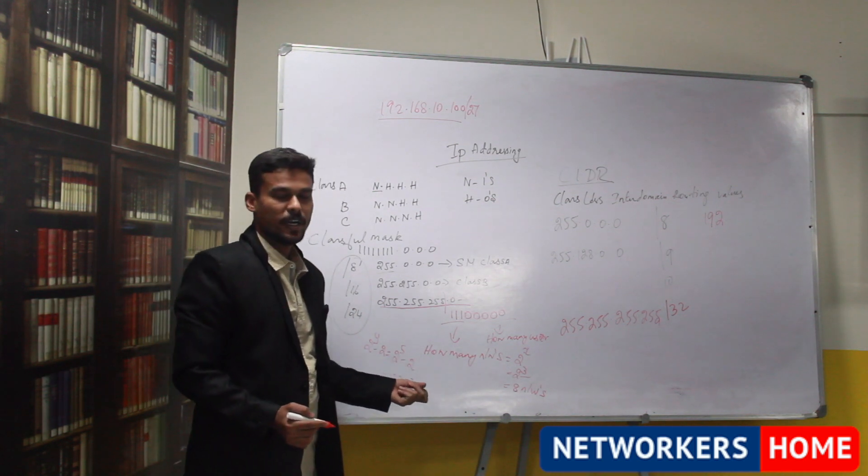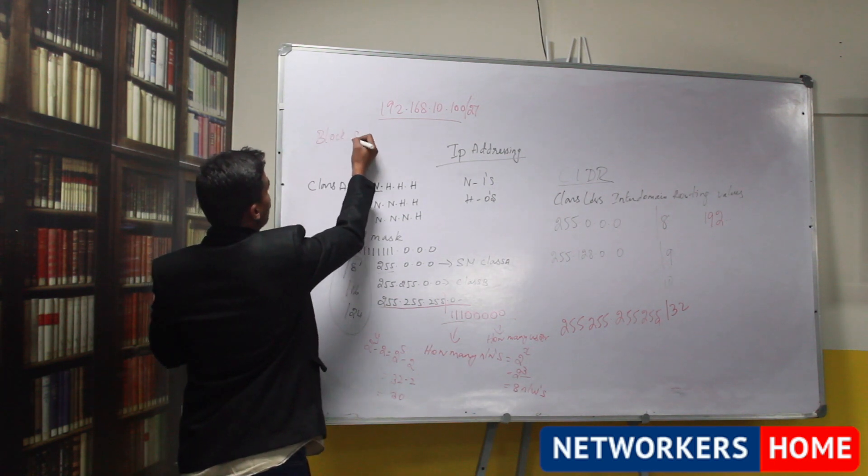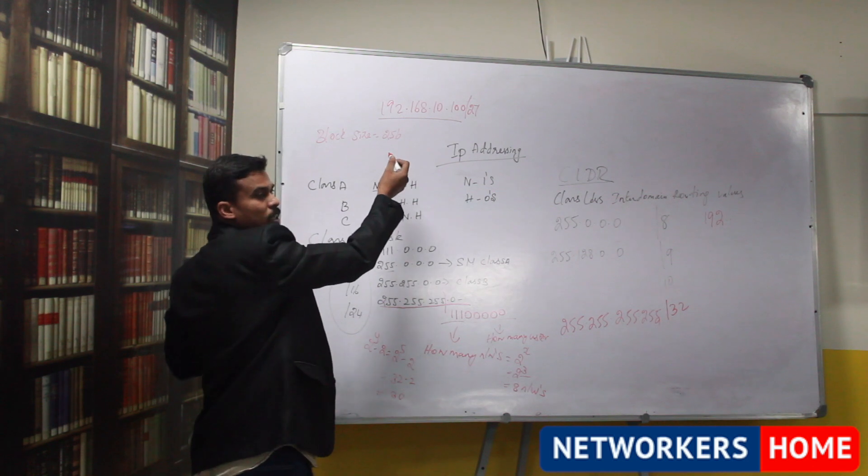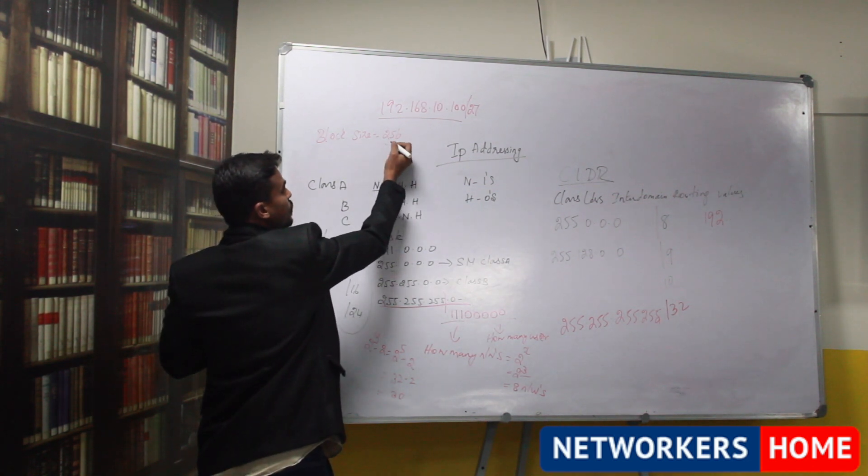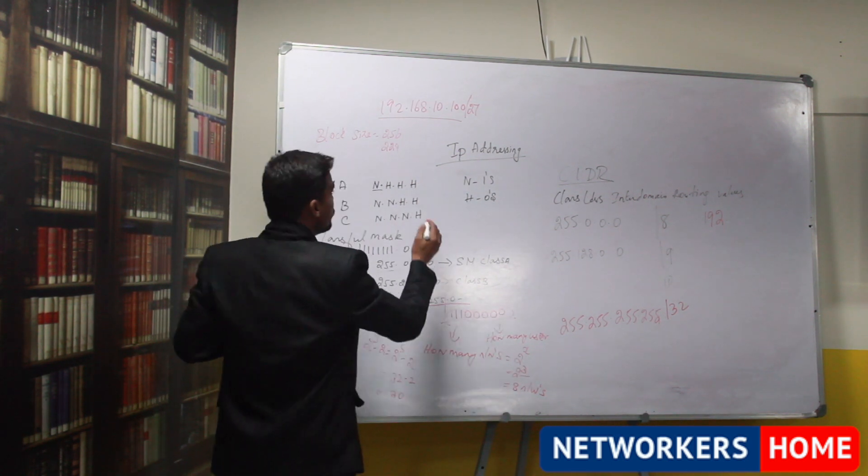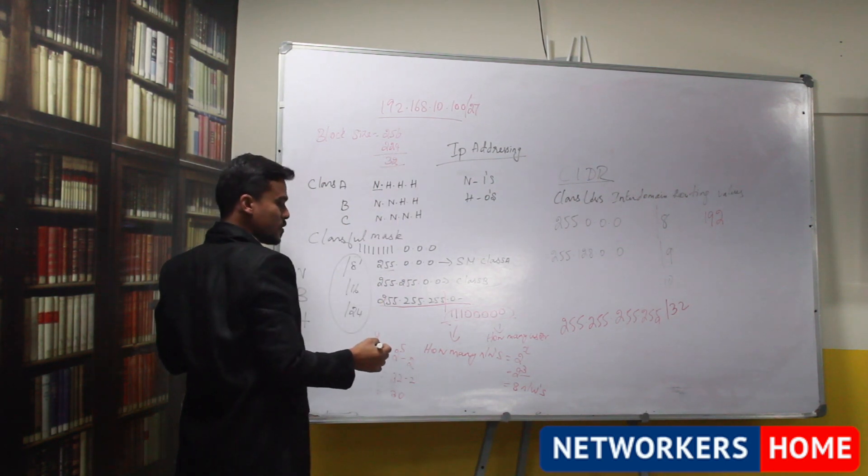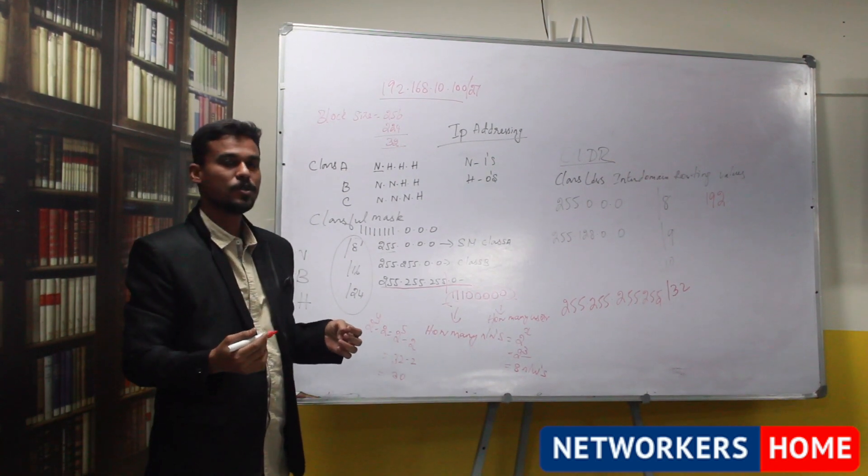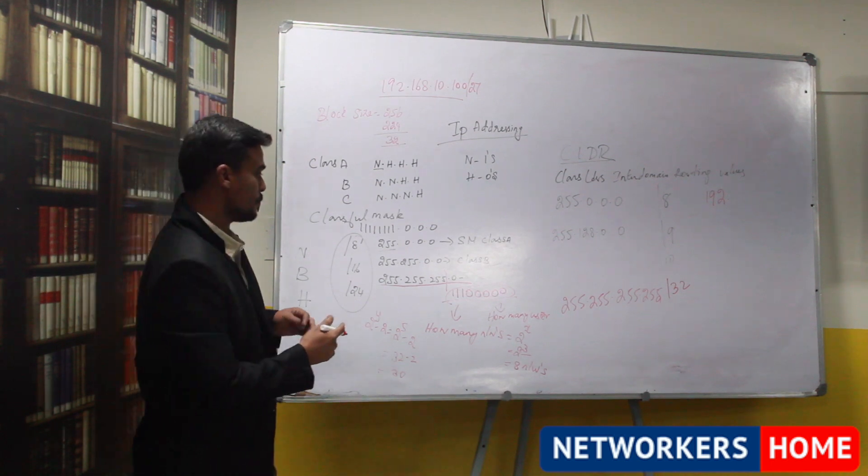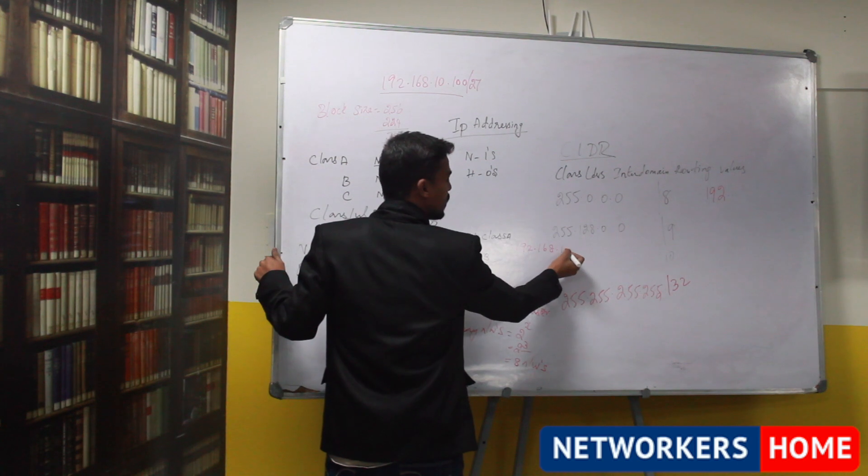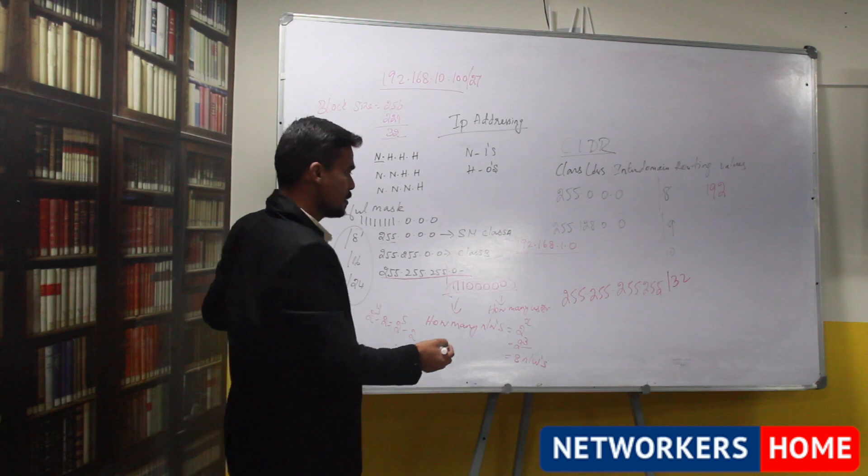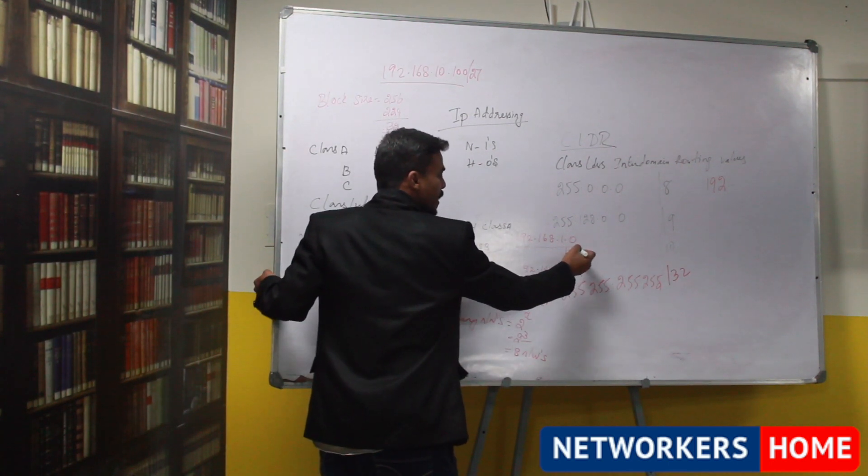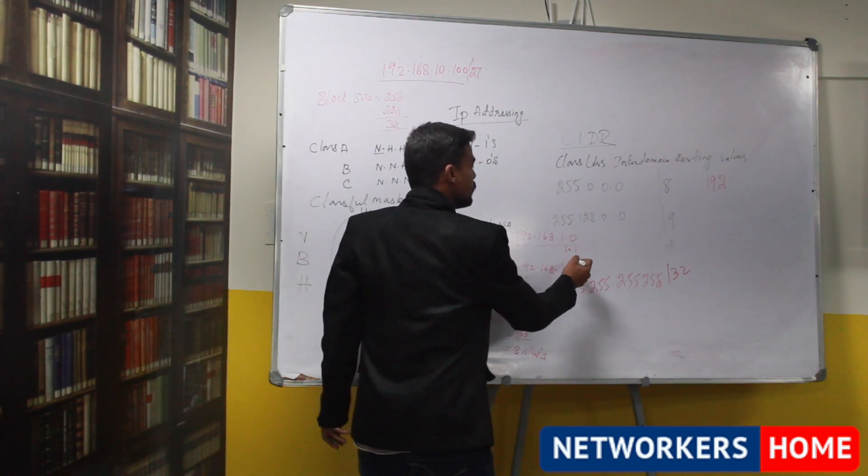We got 8 networks, how you justify those 8 networks? By means of block size, this is the generalized formula 256 minus 224, so the borrowed bits octets if you write in decimal you will be getting 224. Subtract it you will be getting 32. In fourth octet the value will be keep on changing in terms of 32: 0, 32, 64, up to 224, totally 8 networks. In the first network you will be having 192.168.1.0, the first IP is called as network address and the last IP in that network is called as broadcast address that is 31. After network ID whatever the IP comes it is first valid IP, before broadcast address it is called as last valid IP.